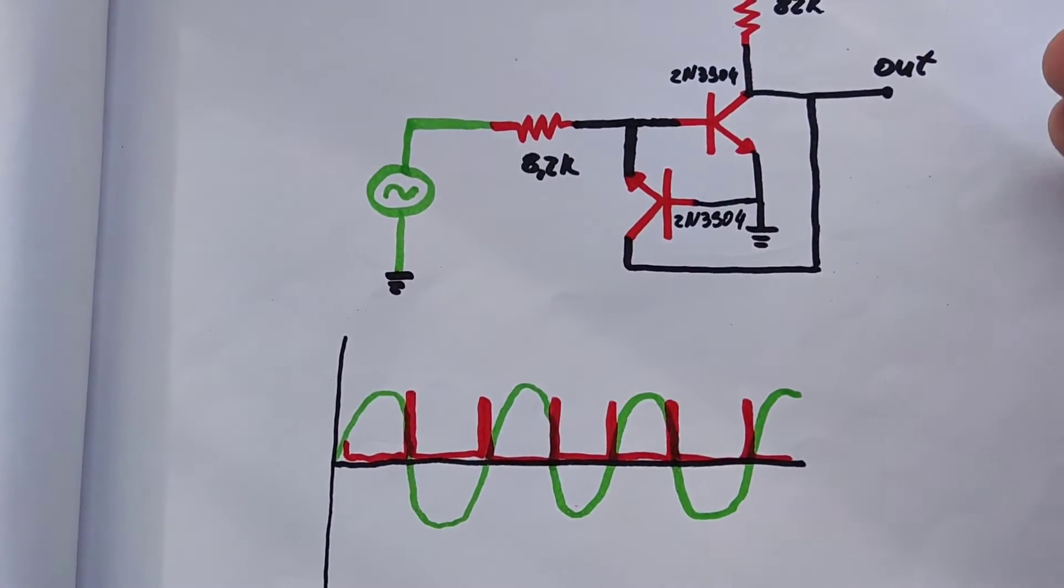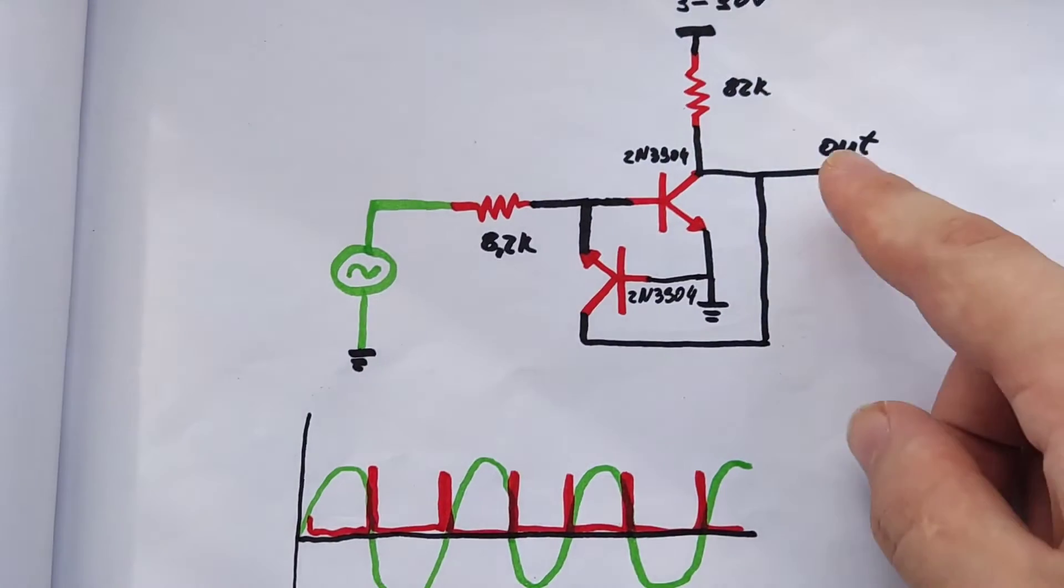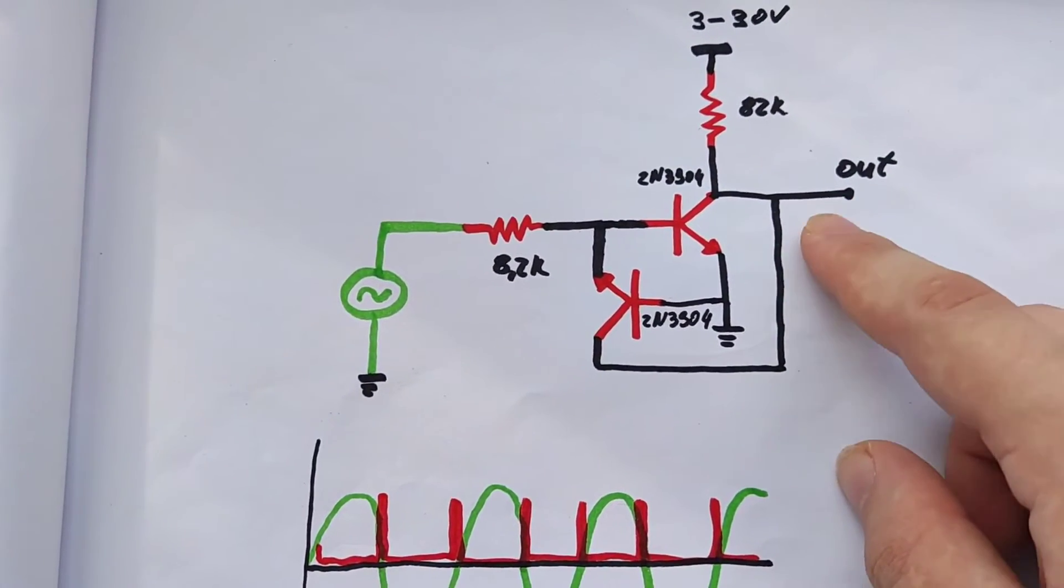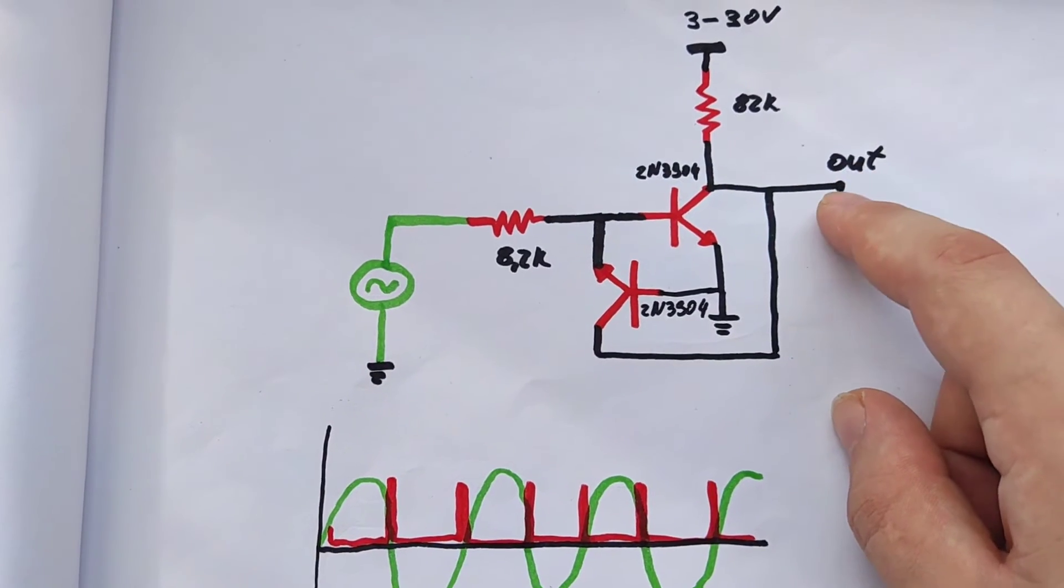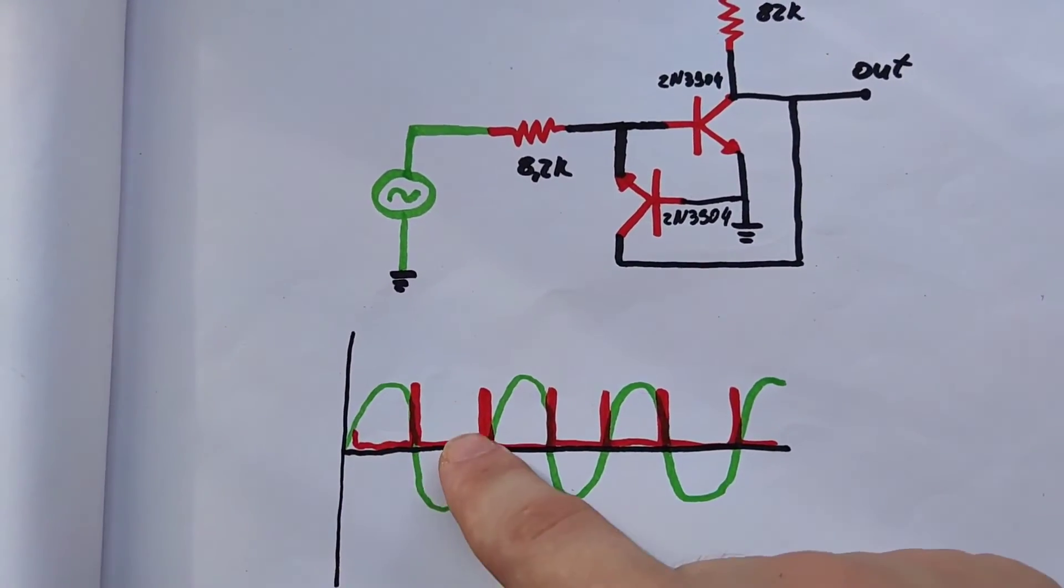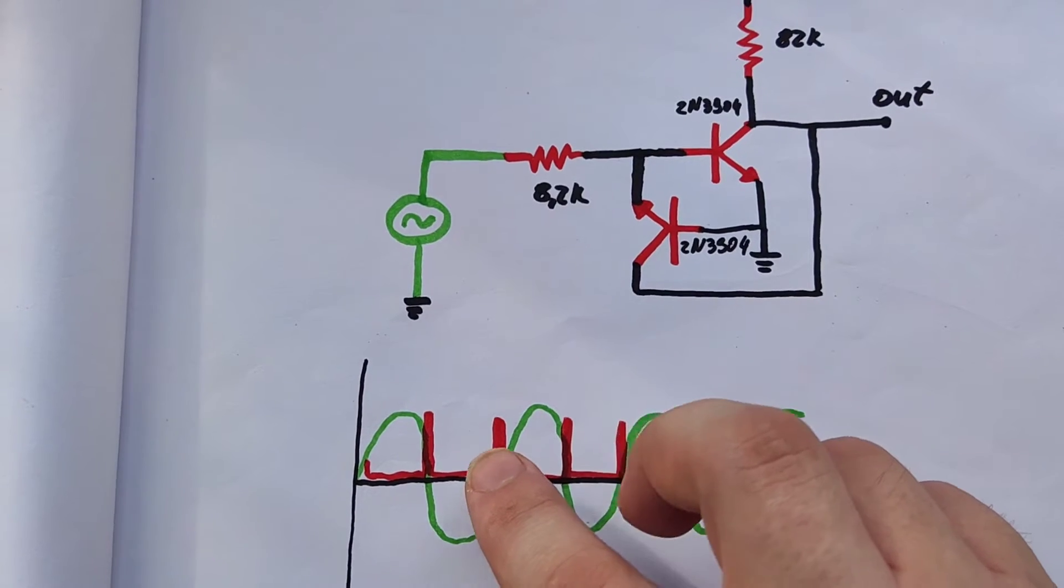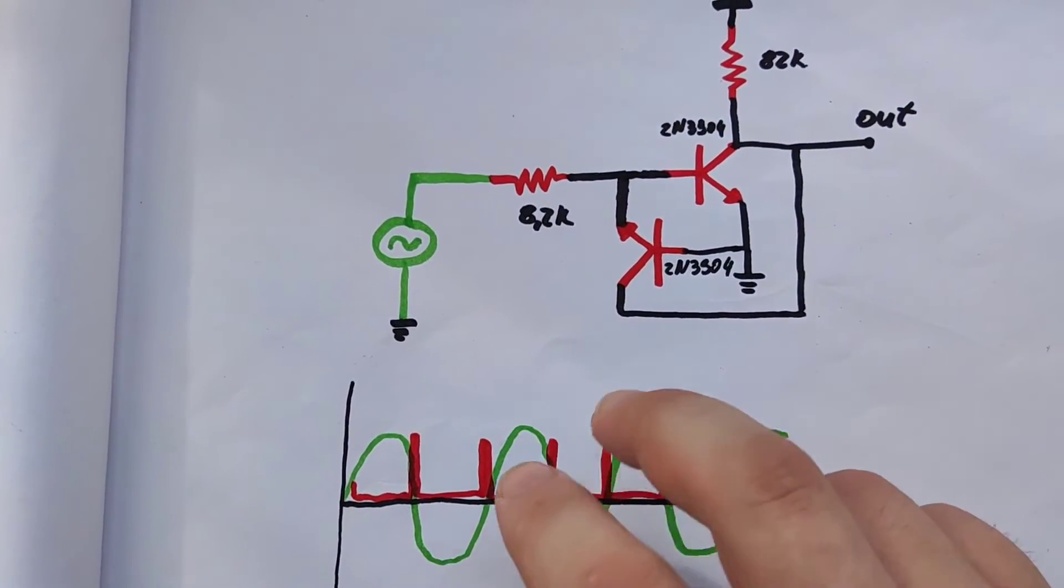Short story long, when the voltage is between minus 0.6 to 0.6, the output is high. Anywhere else, the output is low. So the output is high only when the AC voltage passes through zero.